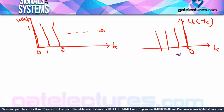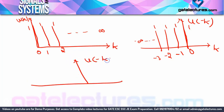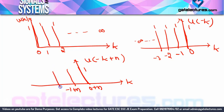Now let me draw u(N minus k). For this, first draw u(minus k) — it's the mirror of uk with respect to y-axis: at 0 it's 1, at minus 1 it's 1, at minus 2 it's 1, at minus 3 it's 1, and so on. Then to get u(N minus k), add N to every k value: 0 becomes N, minus 1 becomes N minus 1, minus 2 becomes N minus 2, and so on. Every sample value remains 1.